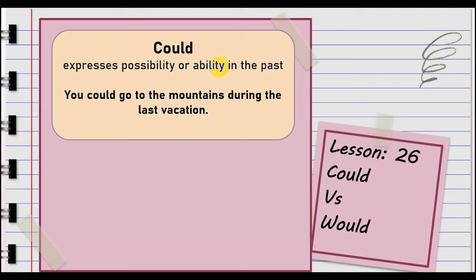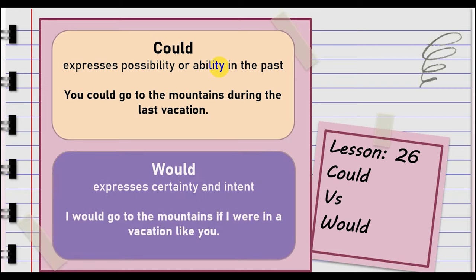What is the possibility that we could do in the past? Now look at the other one. Would expresses certainty and intent. I would go to the mountains if I were on vacation like you.